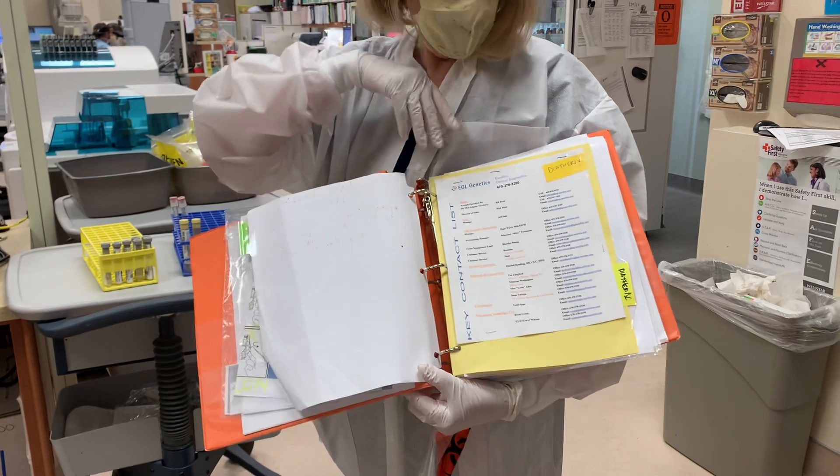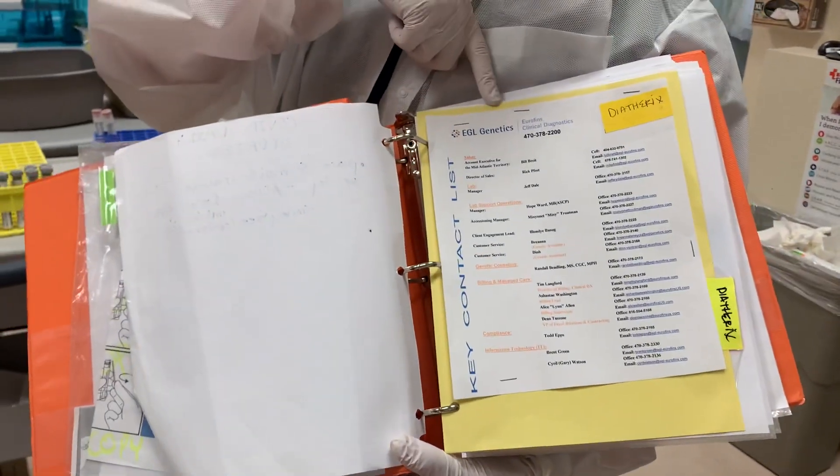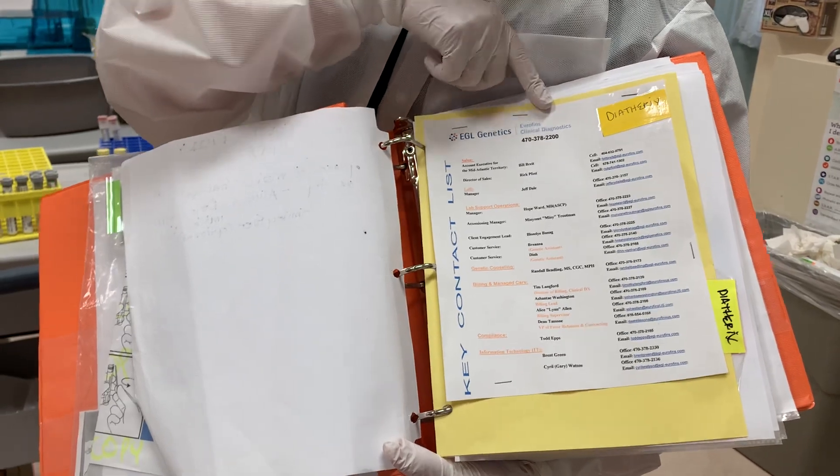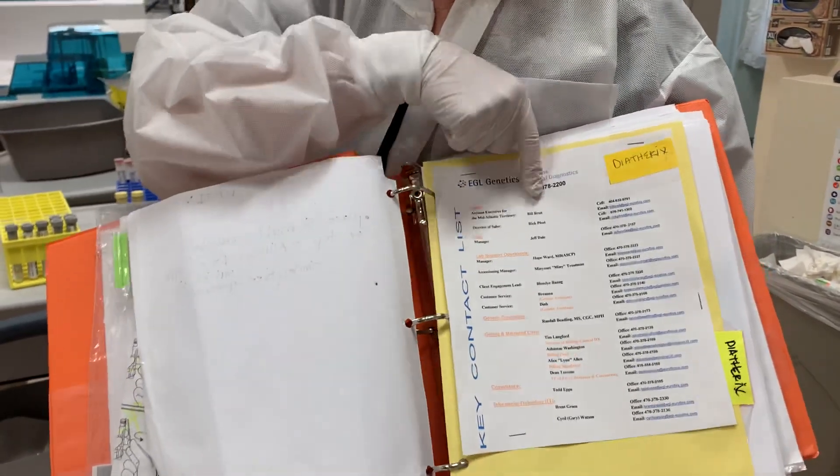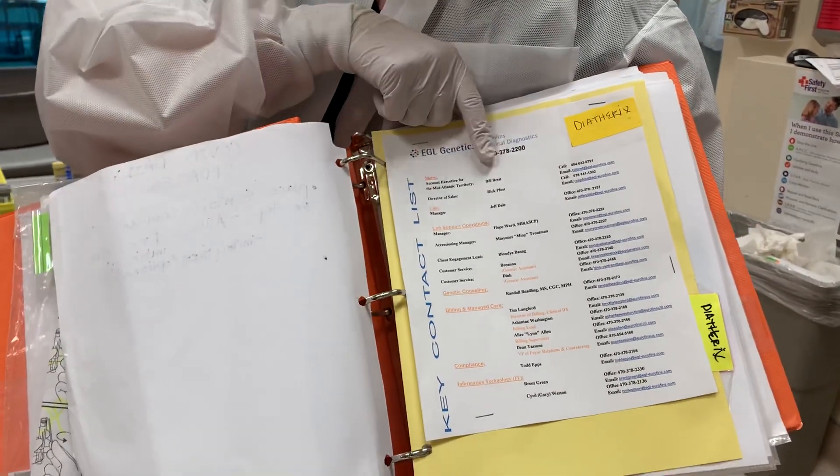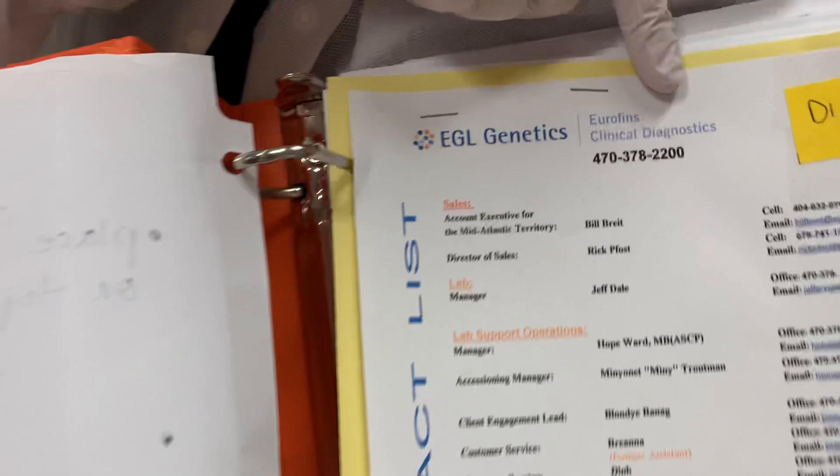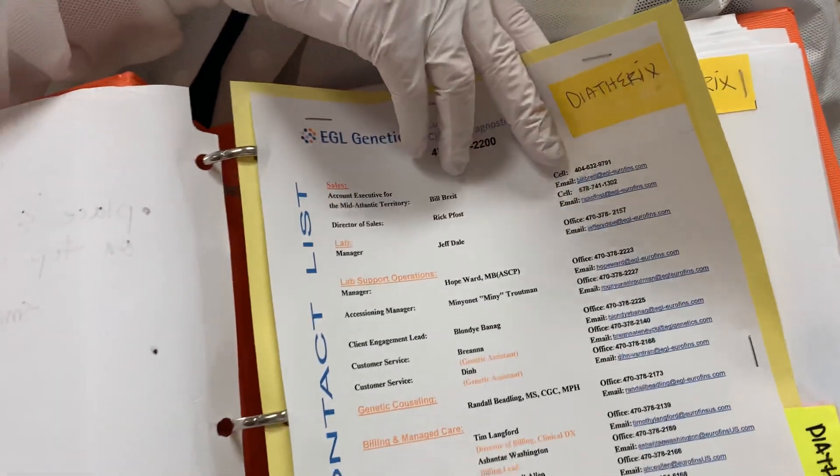So we have a section here for Diatherics, also known as ETL Genetics. It's got several of the numbers. The person that we're actually dealing directly with is this person right here, Bill Bright, not spelled V-R-I-T-H-T but V-R-I-E-I-T. He is our account representative. We've been dealing directly with him.